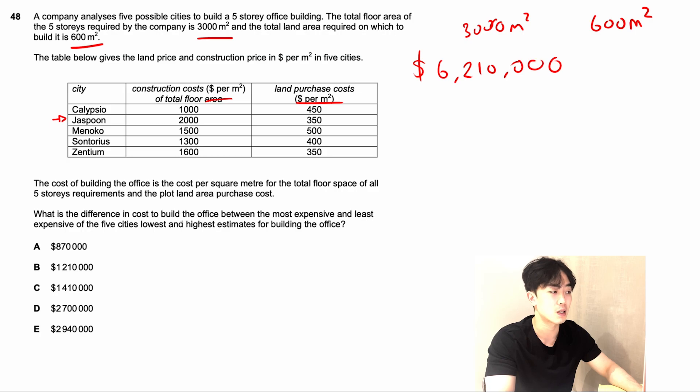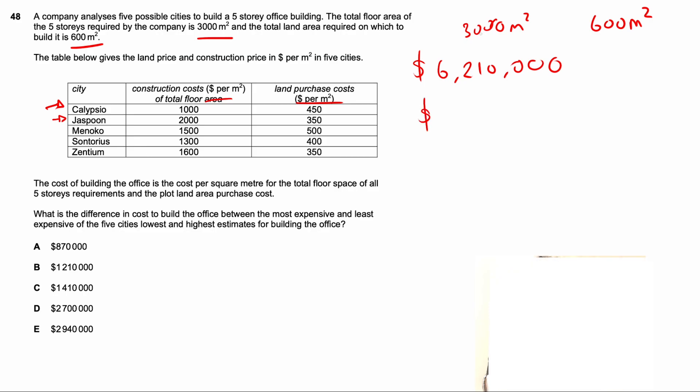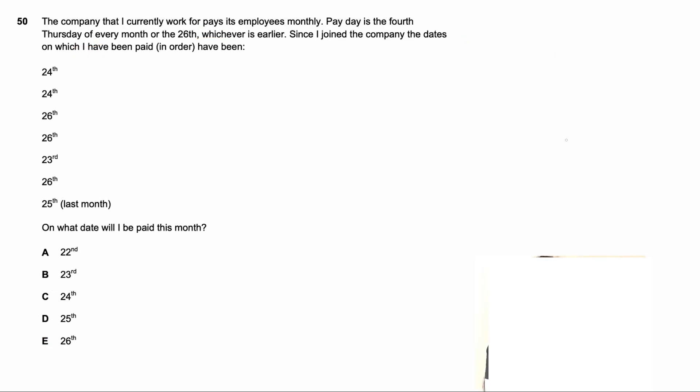Working out the total price for that, $1,000 times 3,000 plus $450 times 600, you get a price of $3 million and $270,000. This is the most expensive, least expensive, and the difference would be $2,940,000.